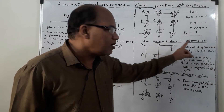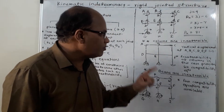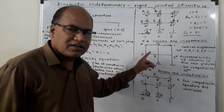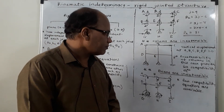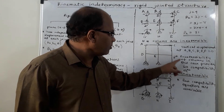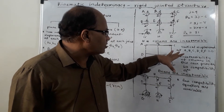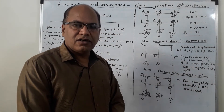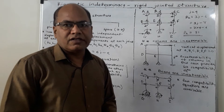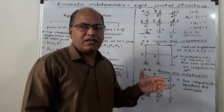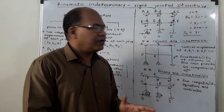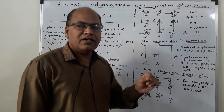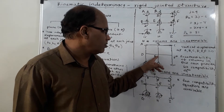If we assume that the columns are inextensible and count the number of columns — 1, 2, 3, 4, 5, 6 — there are 6 columns, and the number of compatibility equations due to the assumption that columns are inextensible is also equal to 6. So the additional number of constraints we get equals the number of columns.